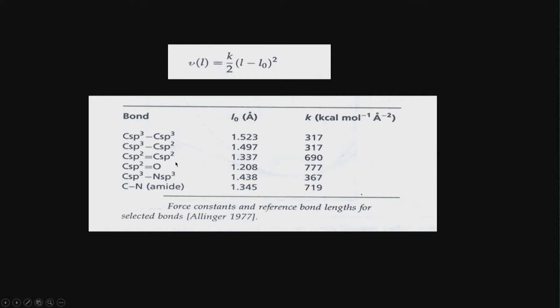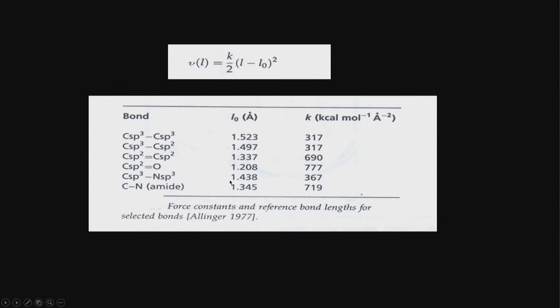So remember, the database for any force field is stored like this. When you draw a structure and specify the different types of carbons and oxygens, automatically these numbers will be selected. The bond stretching energy, bond bending energy, torsion energy, and non-bonded interactions will be calculated, and the total energy of the molecule will be estimated. The more atom types a force field has, the broader the chemical space it covers, making the database larger. These values come either from experimental literature or from ab initio calculations.